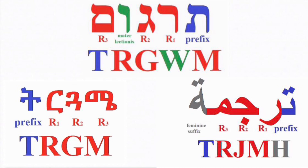And likewise for the Arabic word Tarjama. All these words mean translation, and they are definitely related to each other. Now, the color coding you see on your screen is the sort of explanation of their respective structures which one might reach for based on what was discussed previously in this video — but that would be an error.